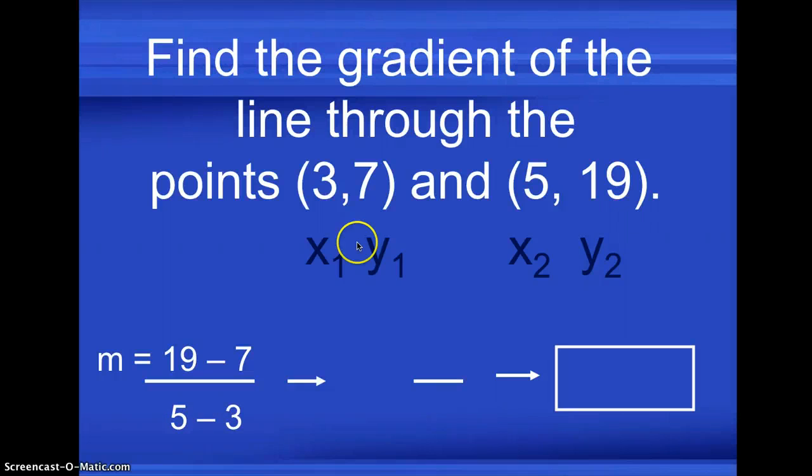So let's assign X1 to 3 and Y1 to 7 and assign 5 as X2 and 19 as Y2. So using the formula or the change of Y divided by the change of X, we go 19 Y2 minus 7 which is Y1, the Y coordinate of the other point, divided by the difference of the X coordinates of two points. So 5 minus 3.